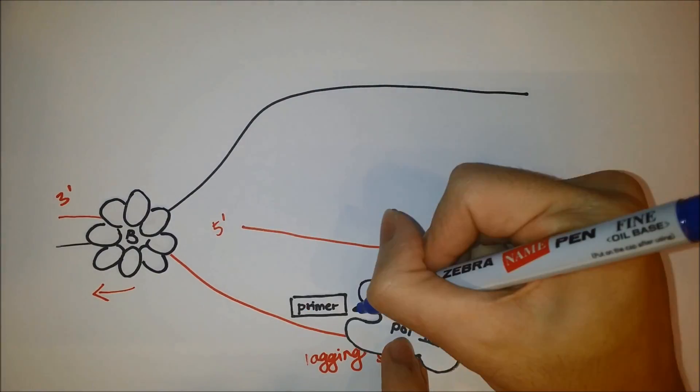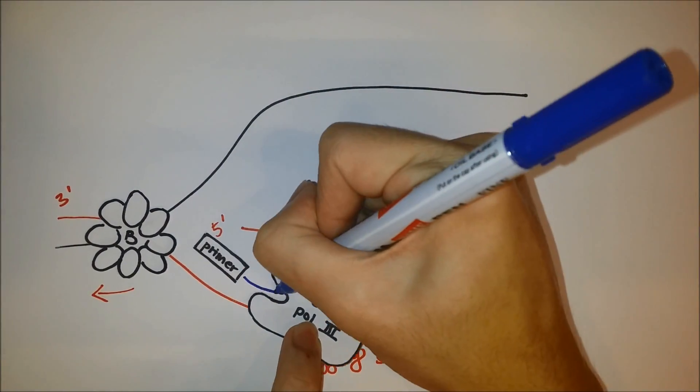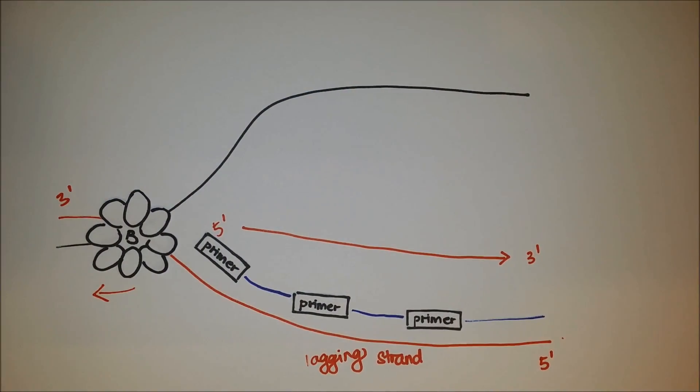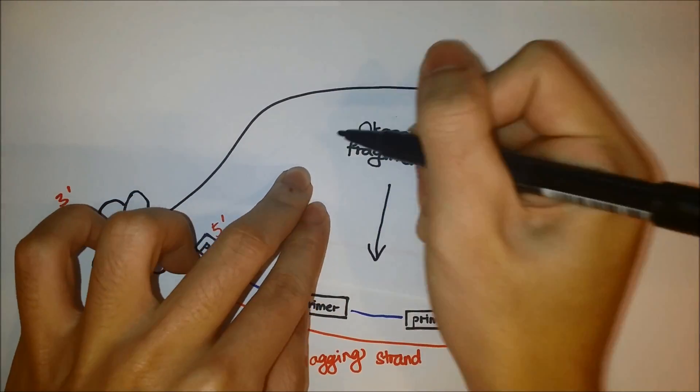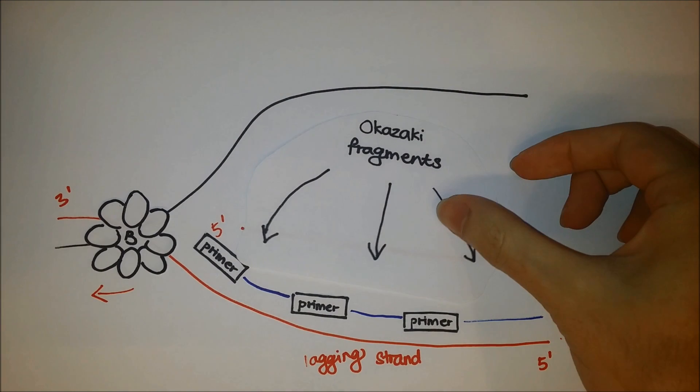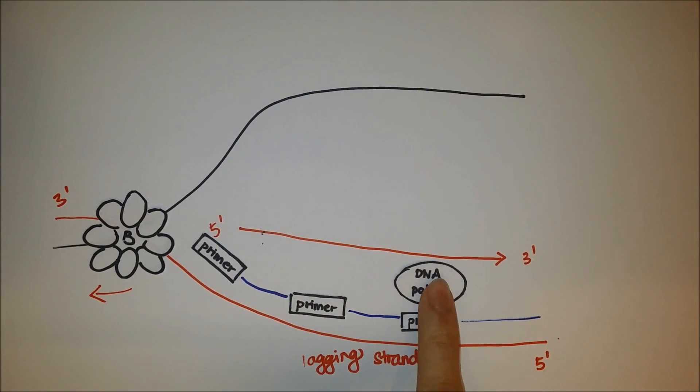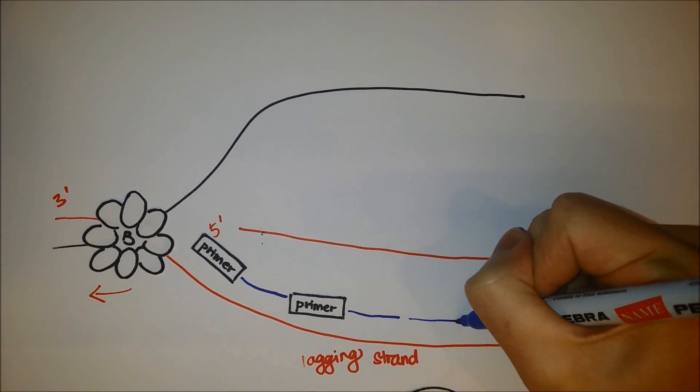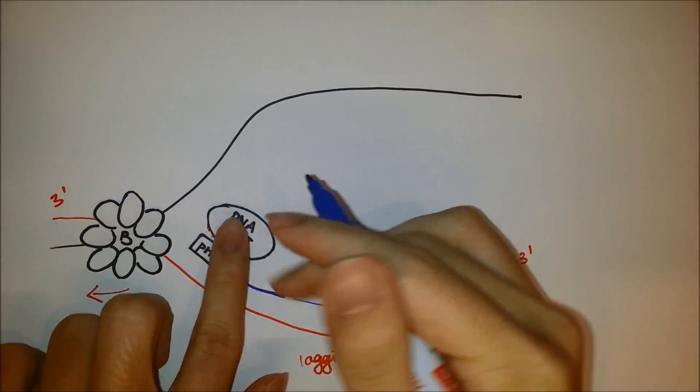Nucleotides are added to each primer by the DNA Polymerase 3. The sliding clamp then releases the DNA Polymerase. This results in precursor fragments known as Okazaki fragments, which consist of approximately a thousand to two thousand nucleotides each. RNase H of the DNA Polymerase 1 removes the primers and the DNA Polymerase 1 replaces the removed primers with nucleotides. This is known as nick translation.